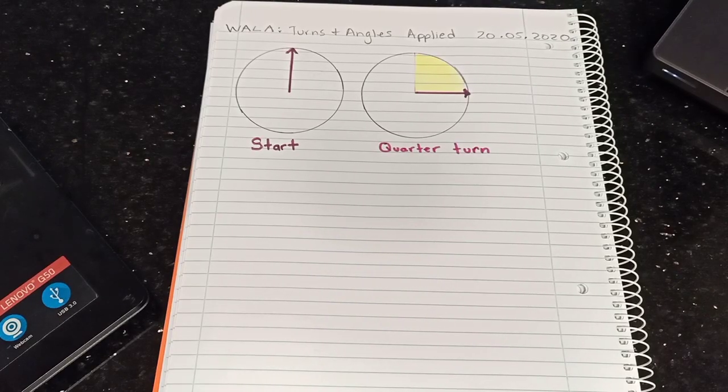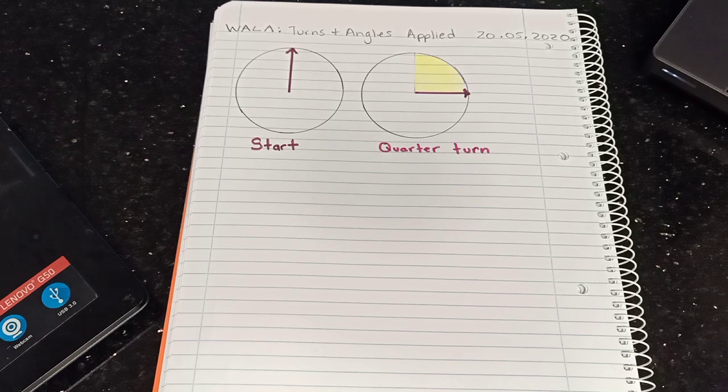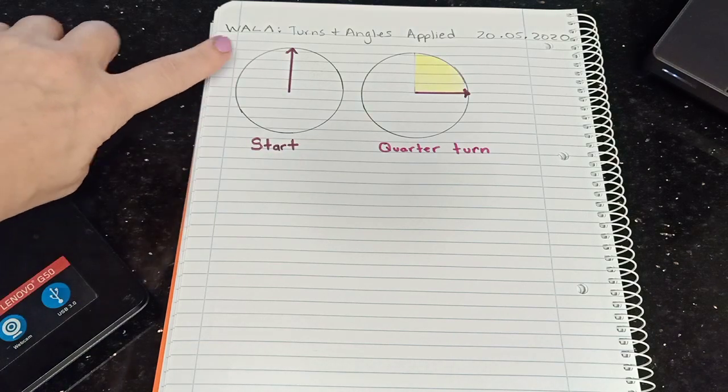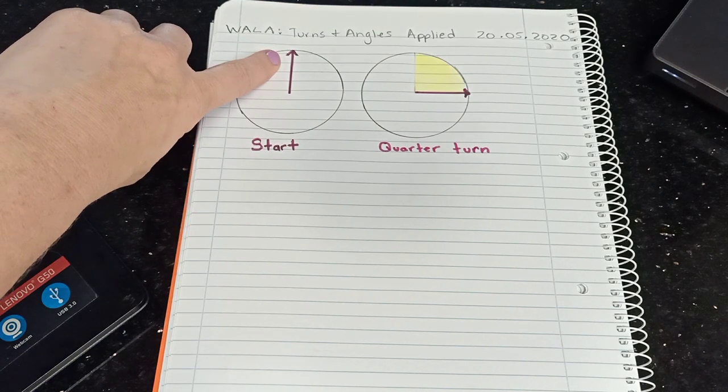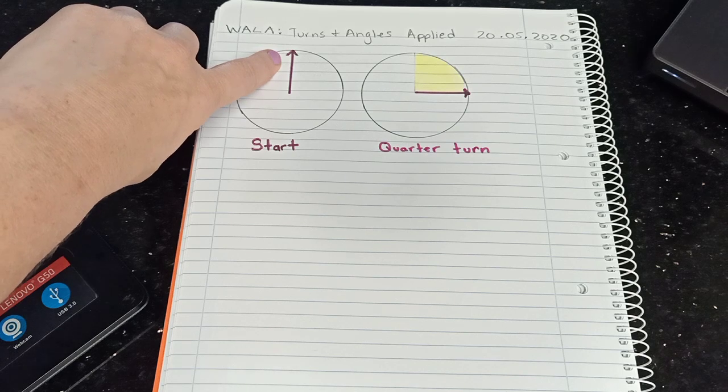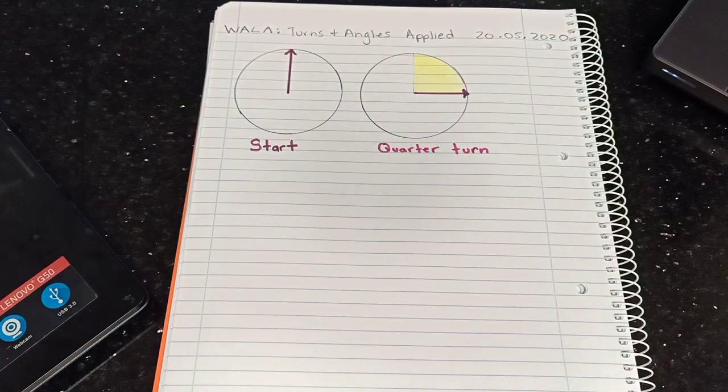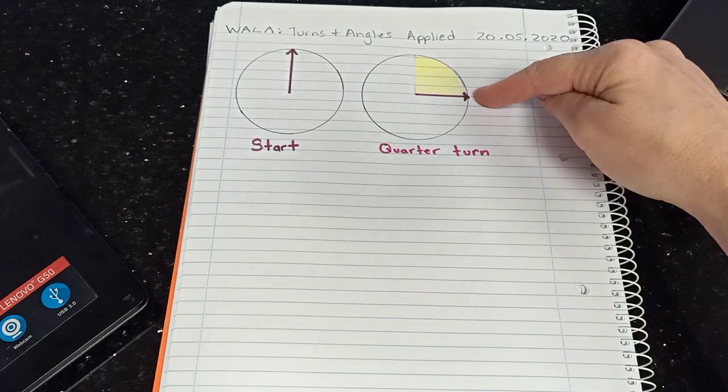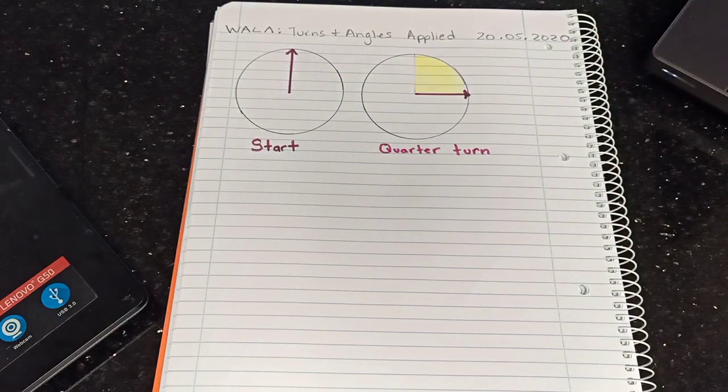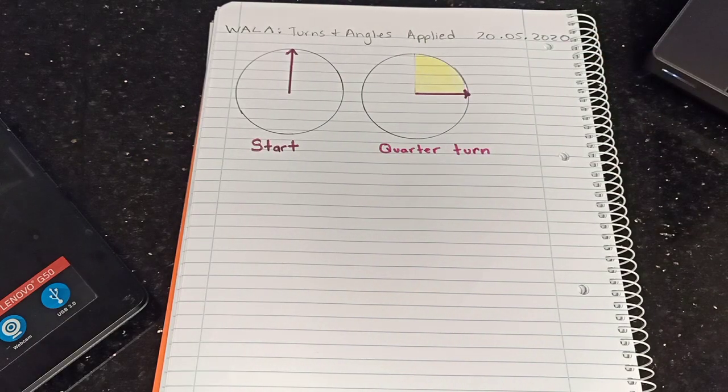Okay guys so we're working on activity one of turns and angles applied. We put our WALA in our book and our date on the top. Then we can see the first circle showing us where the spinner might start here at 12 o'clock and then it has moved over a quarter turn. The spinner is now where the three o'clock would be, showing us a quarter turn.